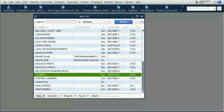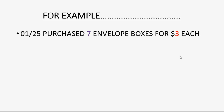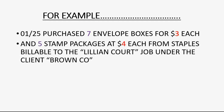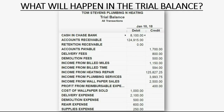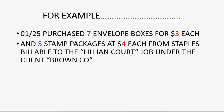Now we have the two items on the list connected to the expense account. Let's imagine on January 25th we purchase seven envelope boxes for $3 each and five stamp packages at $4 each from Staples, and both are billable to the Lillian Court job under Brown Company. The total is $41, so supplies expense would increase by $41 and become $291, and cash in bank would decrease by $41 and become $8,059.